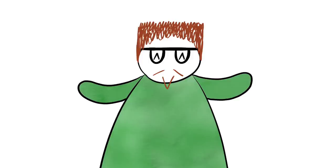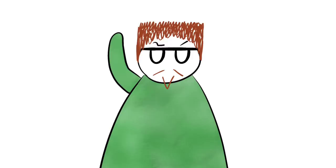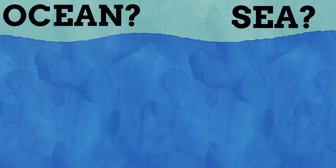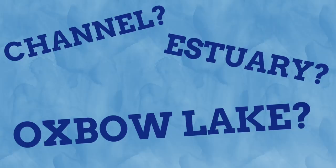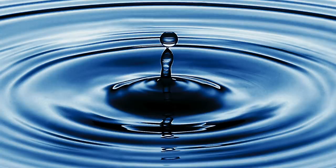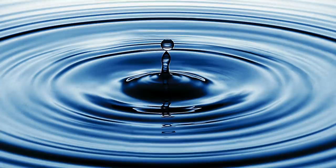All these different ways that water accumulates are called bodies of water, and different kinds have different names. These different names can seem a little confusing and even overlap at times. A lake and a pond seem pretty similar — why do they have different names? Same for a river and a stream, and an ocean and a sea. And what exactly is a channel, an estuary, or an oxbow lake? These are names you may have heard but have no clue what they actually are.